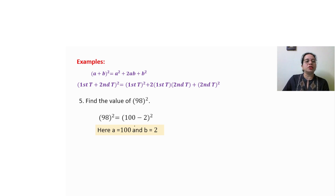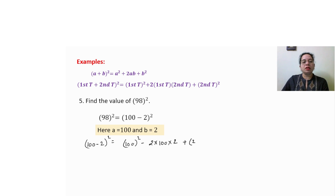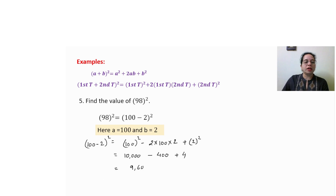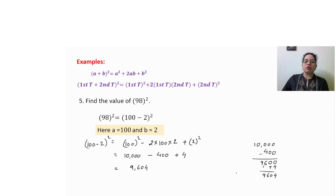We can use the same identity to find numerical values too. To find 98 squared, write 98 as (100 minus 2) whole square. Since the minus sign is there, use the second identity: 100 square minus 2 into 100 into 2 plus 2 square, which gives 10,000 minus 400 plus 4. Subtracting gives 9,600, then adding 4 gives 9,604. It is always better to do calculation in a rough column to avoid mistakes.